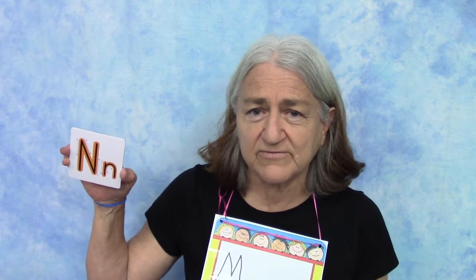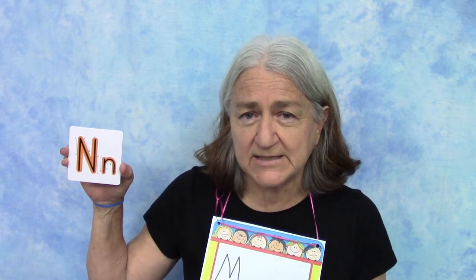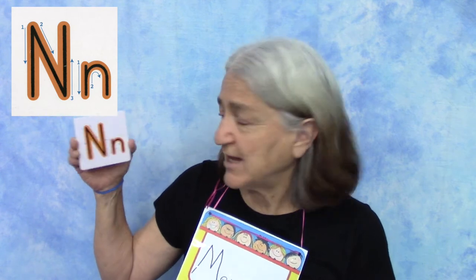We're going to follow along and draw an upper and lowercase N together, using either the card I have here or the N up on the top screen. We're going to start at the very top of our board and move a line down. Then we're going to go back to that very same spot on the top and make a diagonal down, and then go all the way back up. That's our uppercase N.